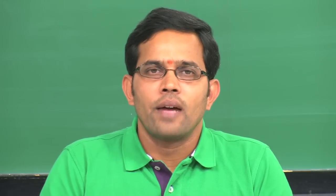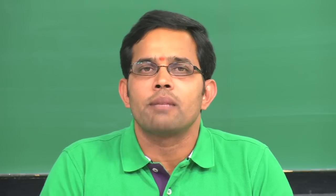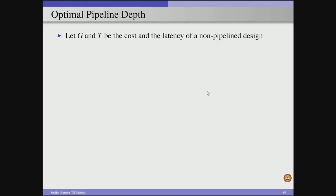We can divide our combinational logic to a maximum number of pipeline stages by satisfying the clocking constraint. As long as we account for T_L and clock skew, we can divide combinational logic into n pipeline stages. This determines the maximum number of pipeline stages for a given combinational circuit. However, the maximum number of pipeline stages is not always optimal.